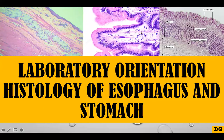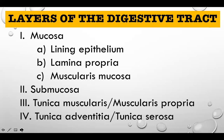This is the laboratory orientation for the histology of esophagus and stomach, together with small and large intestines. Projected on the screen are the general layers of the digestive tract, starting from the mucosa. Mucosa is subdivided into three sub-layers: the lining epithelium, the lamina propria, and the muscularis mucosa. The second layer is the submucosa, third is the tunica muscularis or muscularis propria, and lastly the tunica adventitia and tunica serosa.